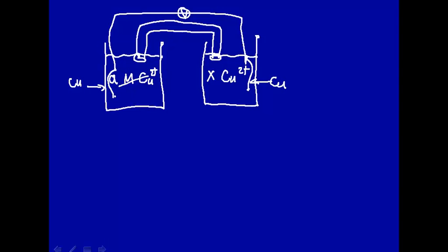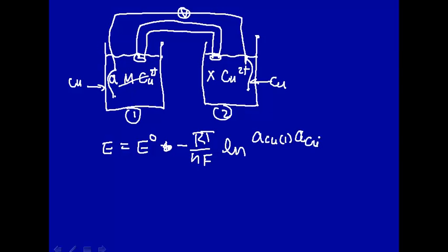Let's write the Nernst equation for this. We'll measure a particular cell voltage E. That will be the standard state cell voltage minus RT over nF times the natural log of the activity of copper, let's do this side 1 and side 2, activity of copper side 1 times the activity of copper 2 plus side 1 divided by the activity of copper side 2 times the activity of copper 2 plus side 2.